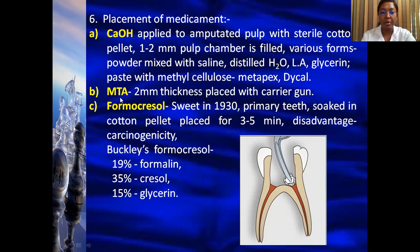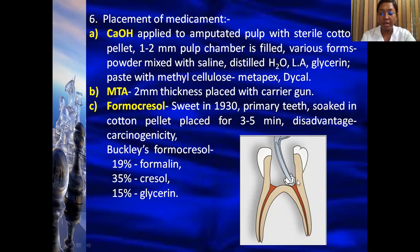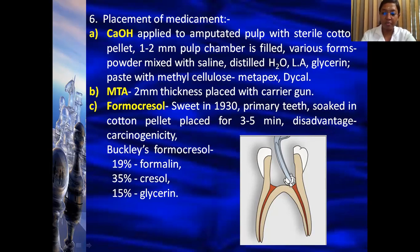Alternatively, MTA (mineral trioxide aggregate) can be placed using a special carrier gun at the level of the CEJ. Or formocresol solution can be soaked on cotton and placed at the level of the root canal orifice. The idea of using formocresol for pulpotomy was introduced by Spedding in the year 1930. It is mainly used in primary teeth. The cotton pellet soaked with formocresol is kept in place for three to five minutes.